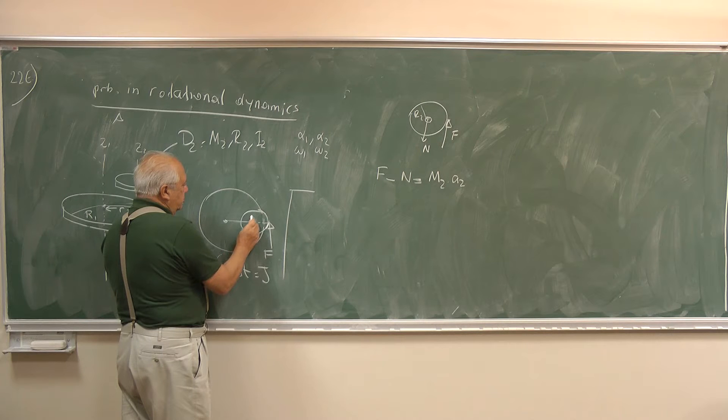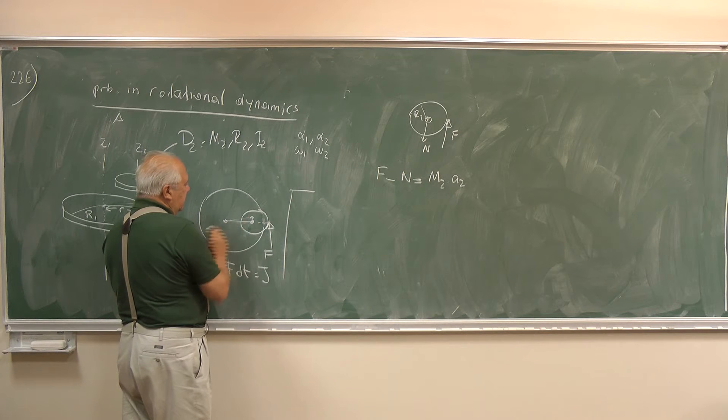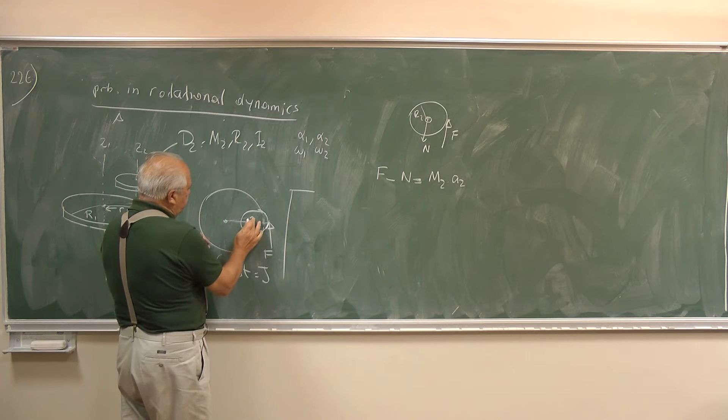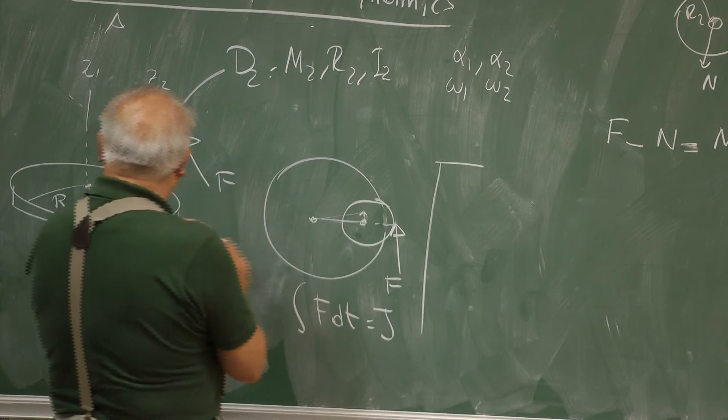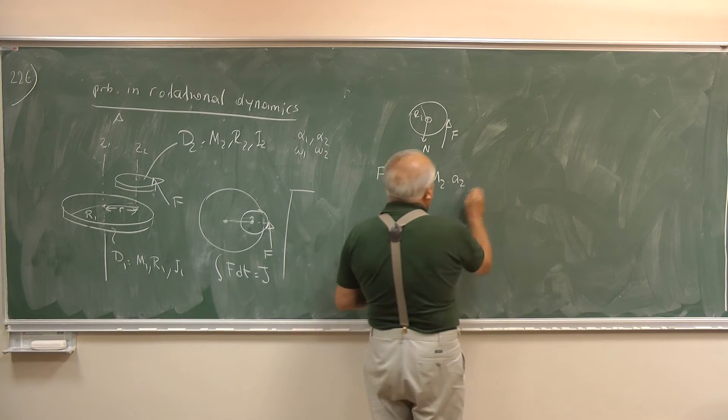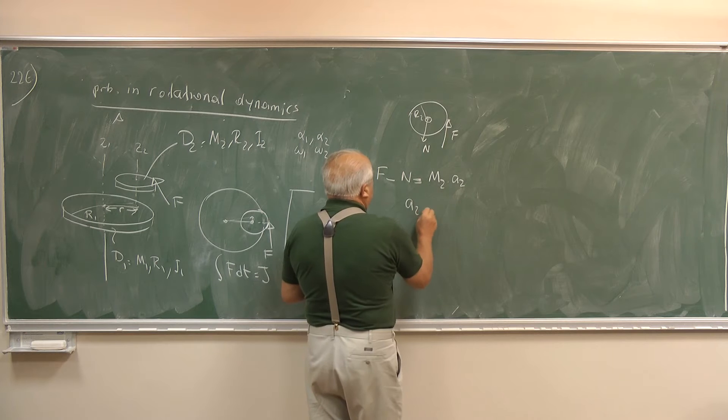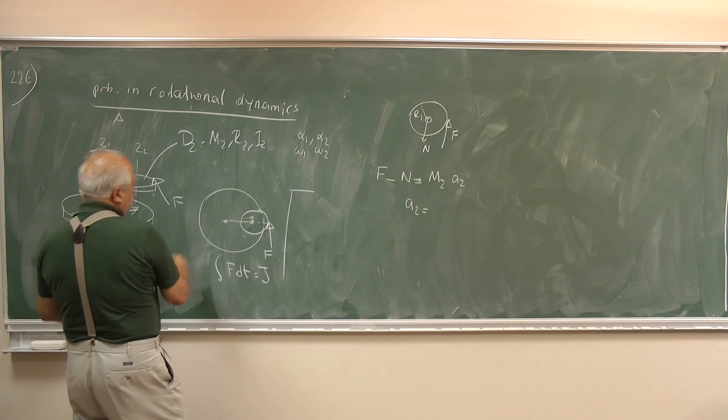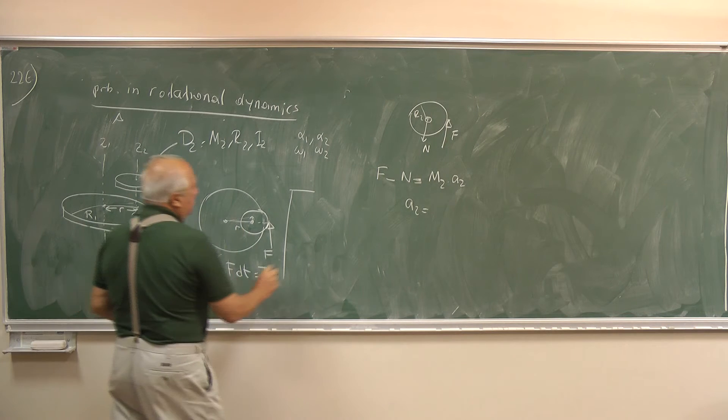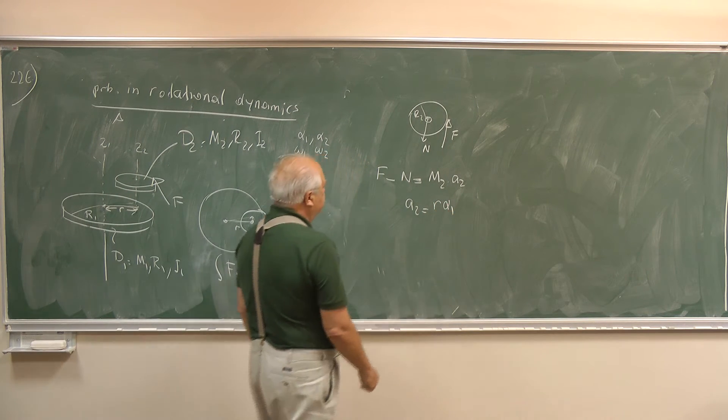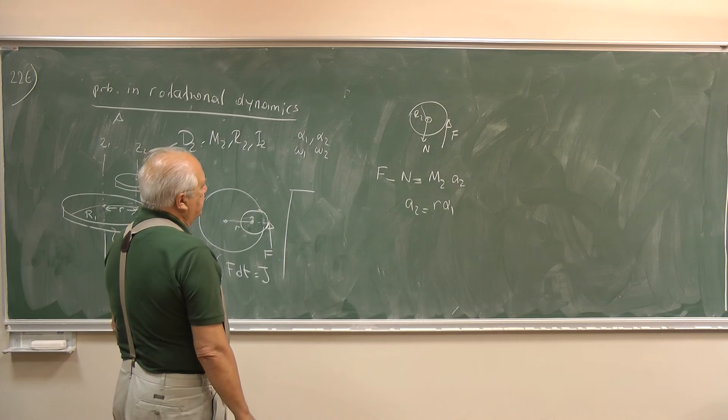But you see, if it moves subtending an angle delta theta, since the axis moves, that means the big disk is rotating. So A2 is nothing but A2 is simply R times this R, because this distance is R, R times α1. So that's about the small disk.